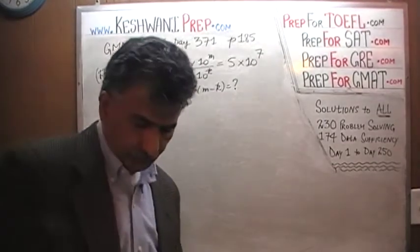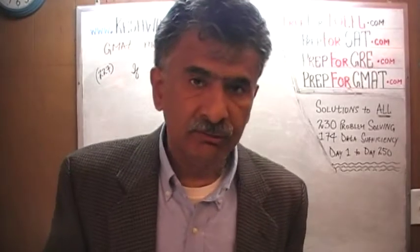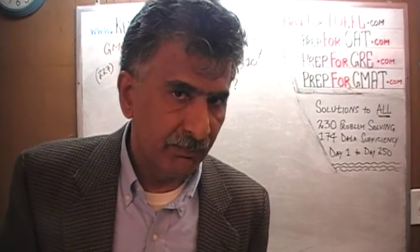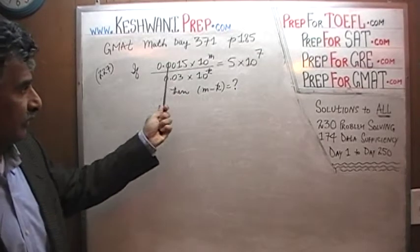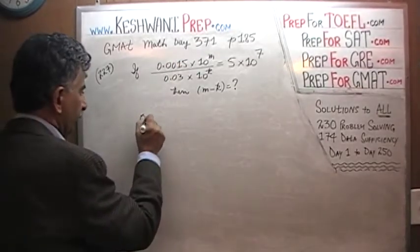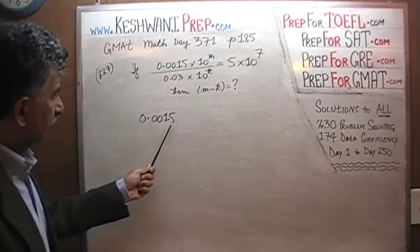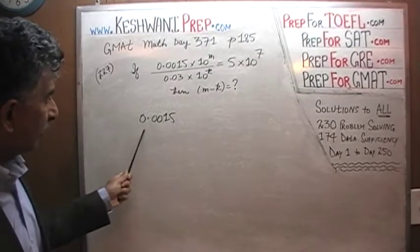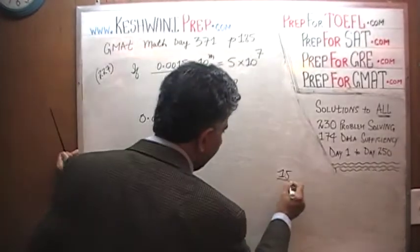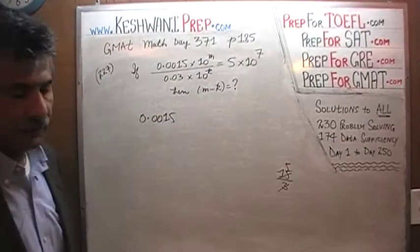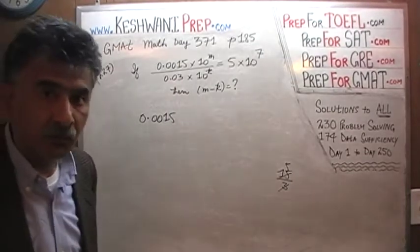Let's find out. The simplest, quickest, easiest thing to do here would be to analyze the numerator and the denominator separately. If we can write the top quantity as 15 and the bottom quantity as 3, then we will have our 5, which is what we have on the right side. Once we have the 5 on both sides, we can drop out the 5 and analyze the exponent of the 10 on both sides.